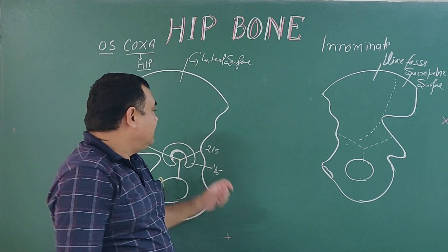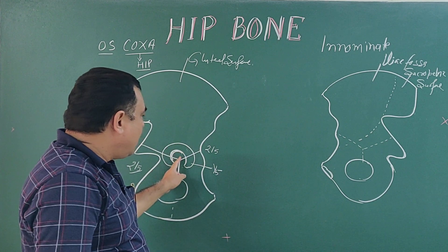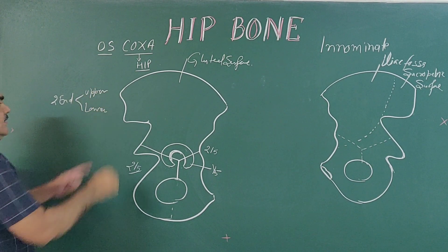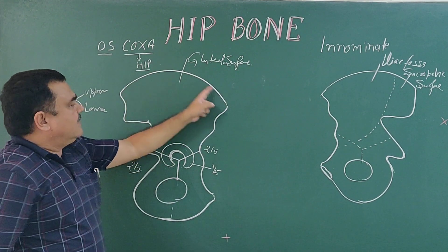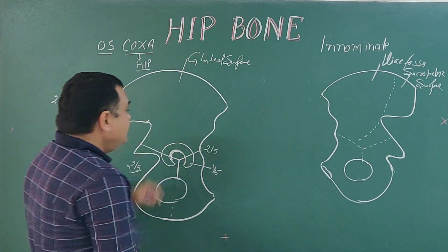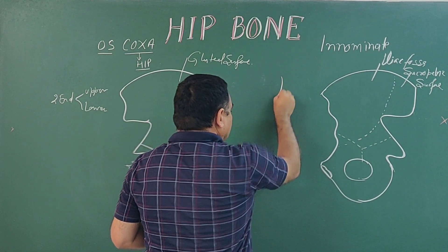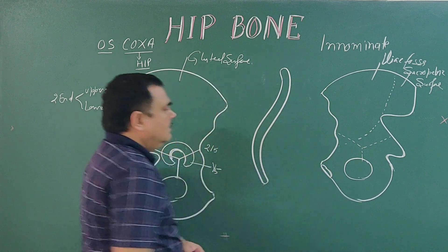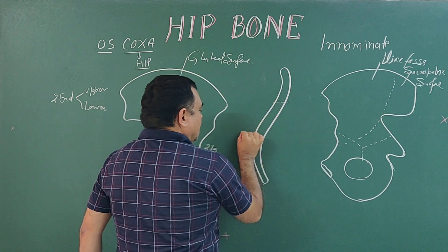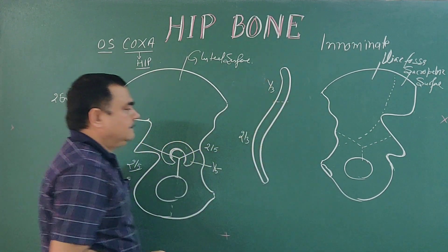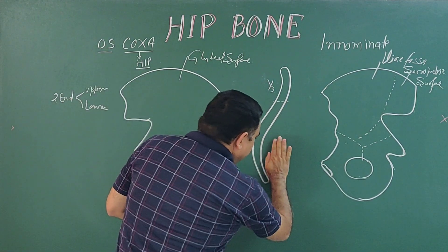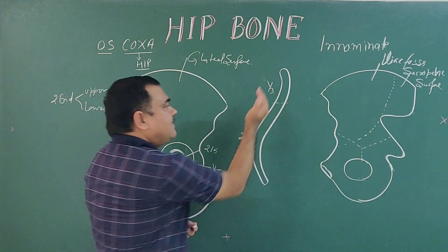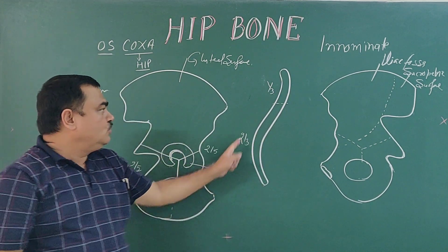Now we will discuss the details of each part of the ilium. It has two ends: upper and lower. The upper end, which is the iliac crest, is convex when seen vertically. It can be divided into an anterior two-thirds part, which is concave medially (on the inner side), and a posterior one-third part, which is concave outward.